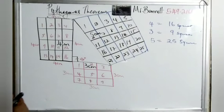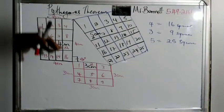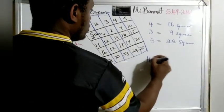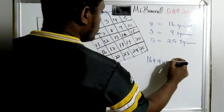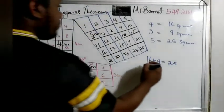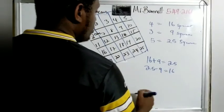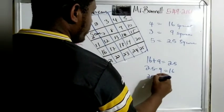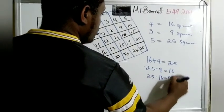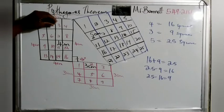Let's look at it now. 16 plus 9 would give us 25. Also, 25 minus 9 would give us 16, and 25 minus 16 would give us 9.